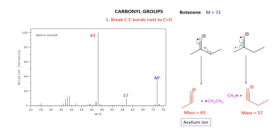So there we are. We can explain pretty much all the major features in butanone: we've got the molecular ion, and then the products from the homolytic cleavage of the carbon-carbon bonds next to the carbonyl group, giving us these acylium ions. We also see a little bit of the hydrocarbon residues as well.